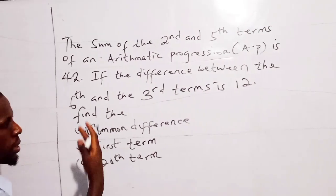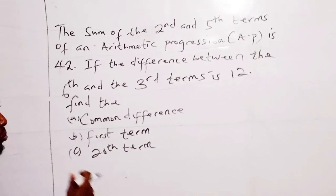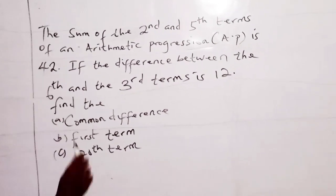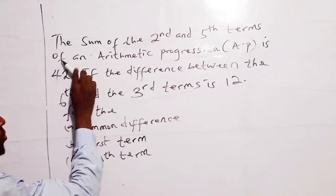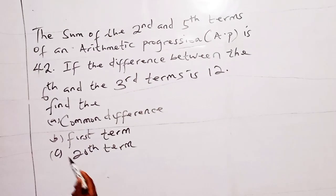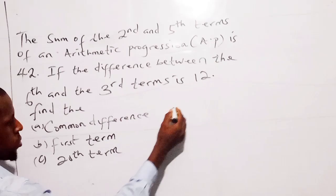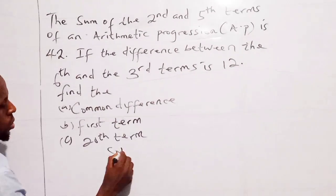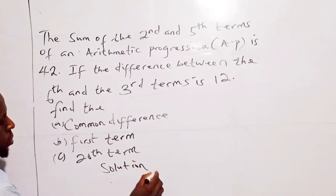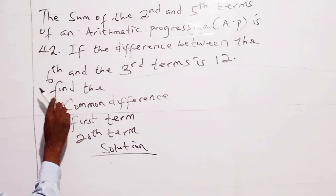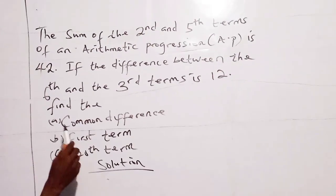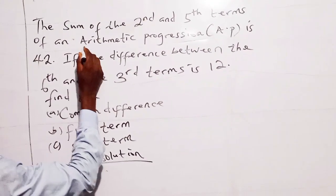So when we have questions like this in the exam, it's very easy for us to do. We just need to interpret all the statements very well and appropriately. So how do we solve with solution? We have a general formula for arithmetic progression, which is first term plus N minus 1 times D.